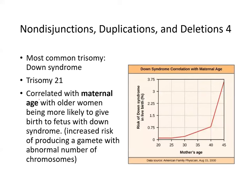The most common trisomy is Down syndrome, trisomy 21, which is correlated with maternal age — older women are more likely to give birth to a fetus with Down syndrome. After age 40, the risk skyrockets. Age is associated with increased risk of producing a gamete with an abnormal number of chromosomes.